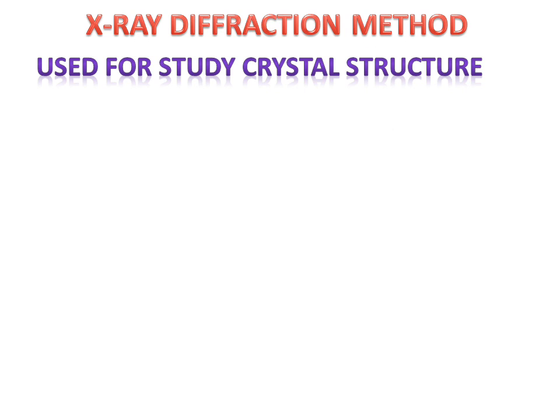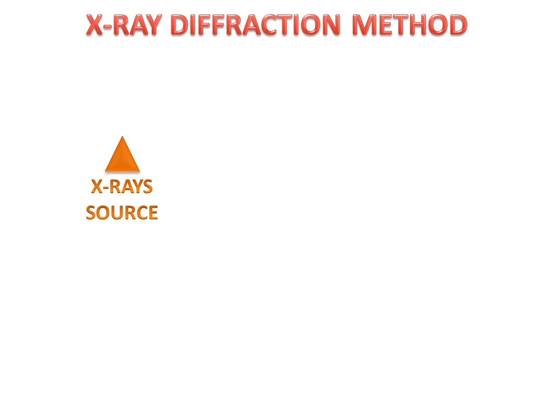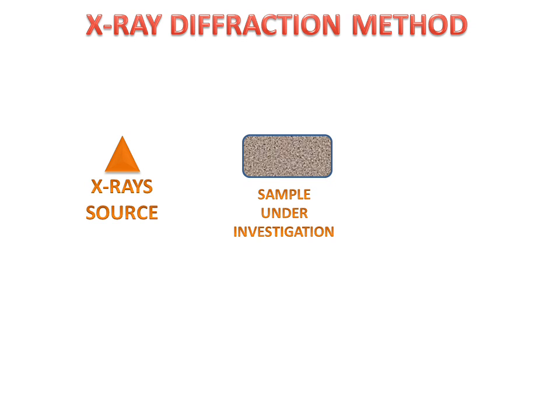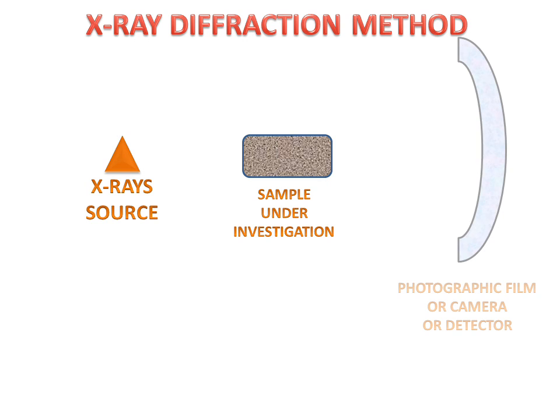First, we will discuss the parts of the X-ray diffraction method. We have an X-ray source which gives us X-rays, a sample under investigation for which we want to study the crystal structure, and a photographic film, camera, or detector for X-ray diffraction.